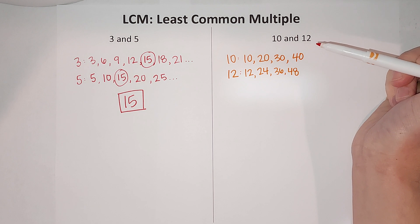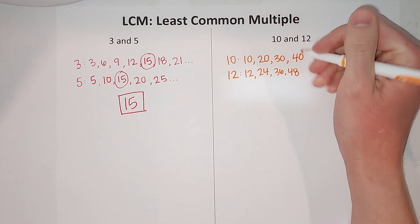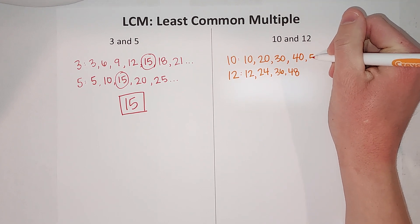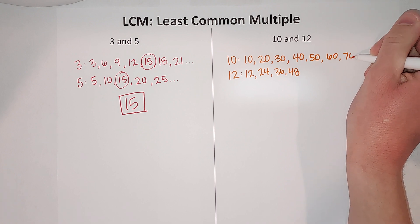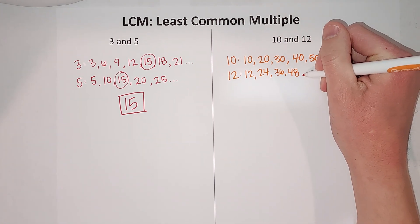So right now I'm stopping and I'm like, uh-oh, they don't have any in common. Well they will, it just means we haven't gone far enough. So I'm gonna do a few more 10s: 40, 50, 60, 70. We'll see if that's enough. Let's go back to our 12s.